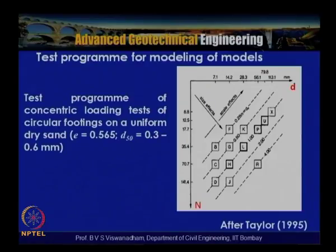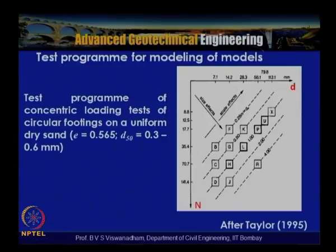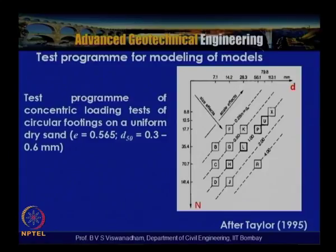Let us look at the test program for modeling of models originally carried out by Olson in 1980, reported by Taylor 1995. The test program consisted of concentric loading on circular footings on uniform dry sand. The void ratio was maintained at e = 0.565 and the average particle size was between 0.3 to 0.6 mm. A number of models were formulated to see where size effects and scale effects would occur.